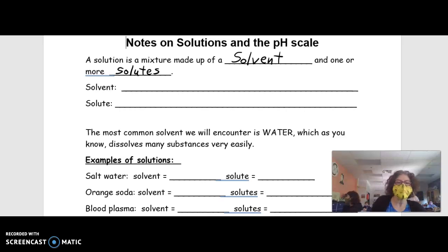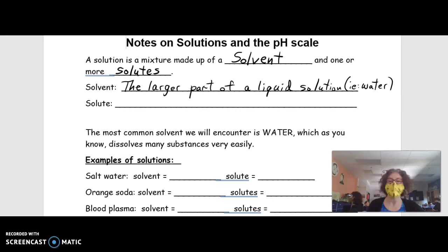So what's a solvent? A solvent is the larger part of a liquid solution. Most of the time, the solvent is water. That is the most common solvent on earth. You already remember learning that water is a universal solvent, which means that water is very good at dissolving lots of different kinds of things.